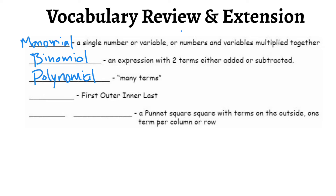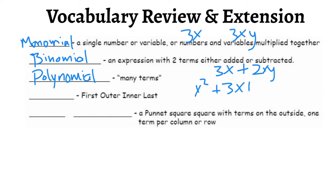So a single term is something like 3x or 3xy — just one term. A binomial is two or more terms, so you can say something like 3x plus 2xy — those are two terms. Three or more terms is a polynomial, like x squared plus 3x plus 5. This is where you have three or more terms in that statement.